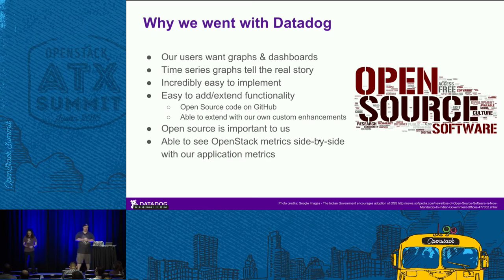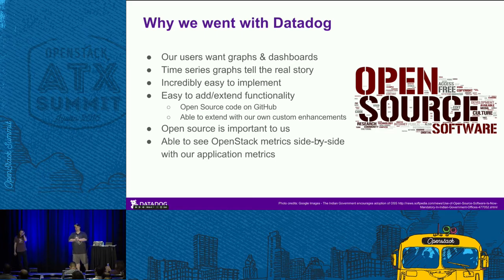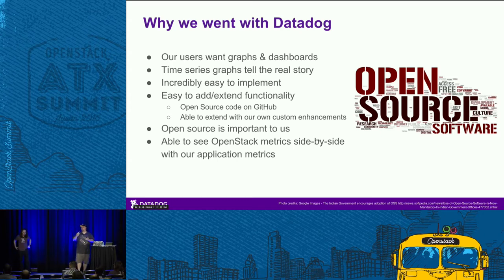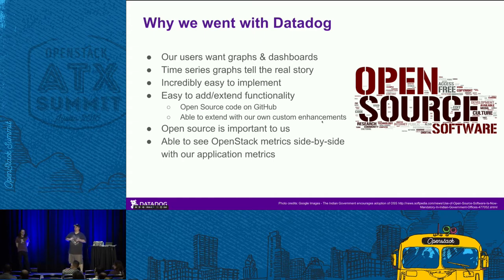So we went with Datadog. We were already using Datadog for our application metrics on all of our VMs. I think we have 2,500 servers of some form — public cloud, private cloud, bare metal — already in Datadog. So being able to pull in our OpenStack metrics was really powerful.